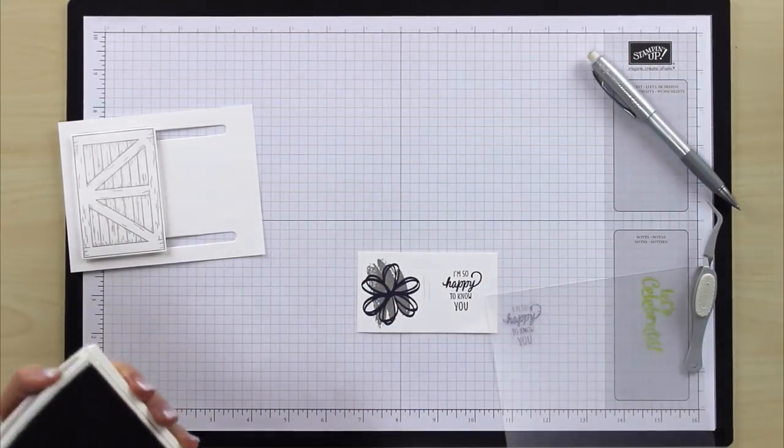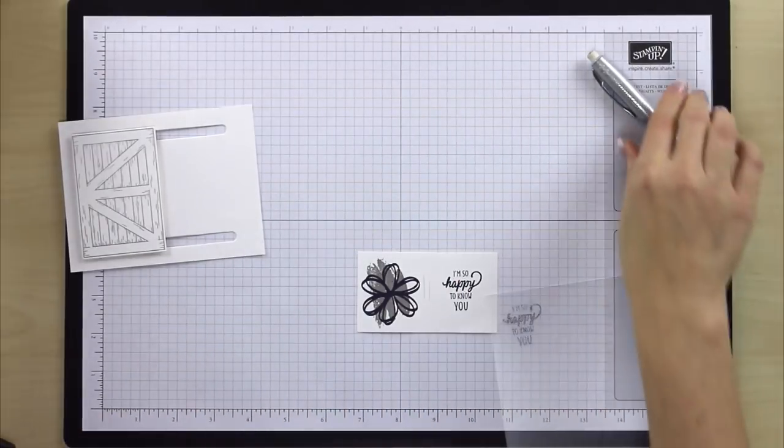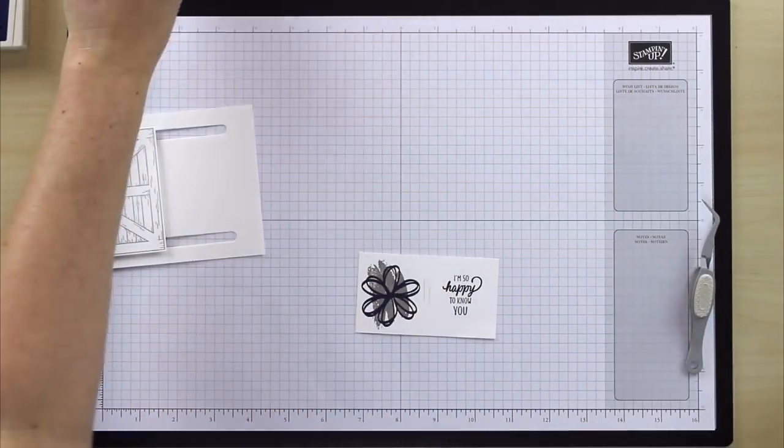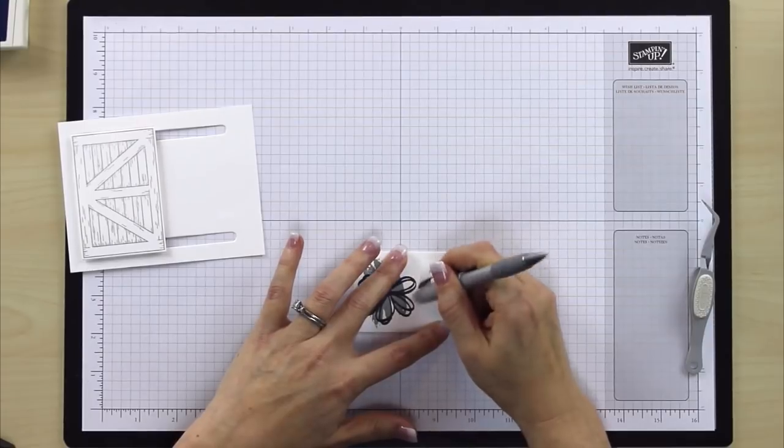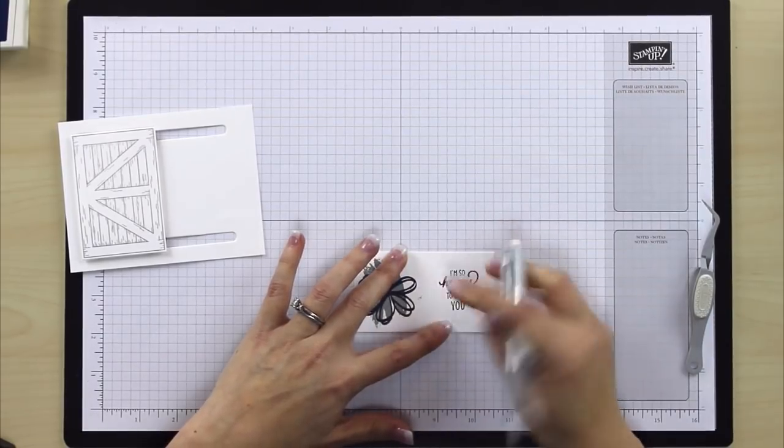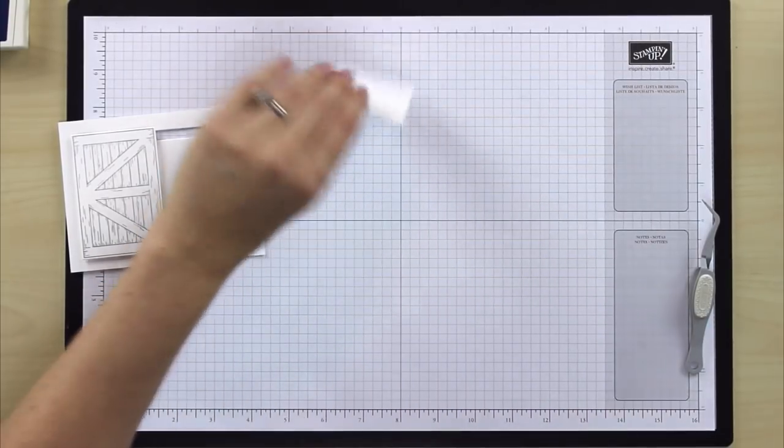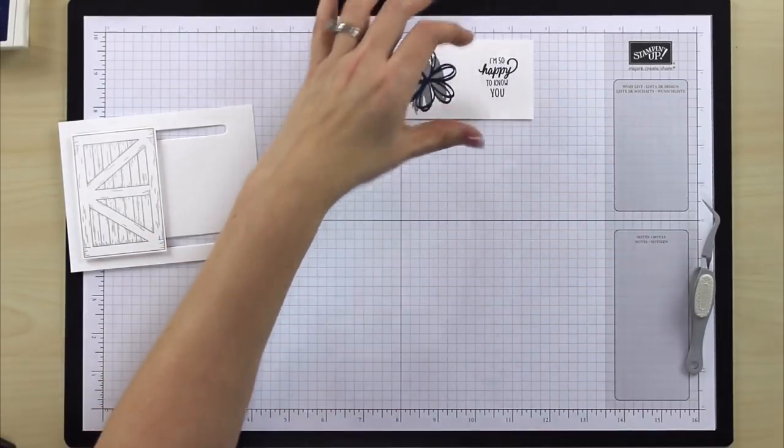Now remember that really good eraser we were talking about? This is when you're going to need it because you want to get rid of those pencil lines. Nobody wants to see those. It's like they were never even there. So now we have done all of our die cutting, we have done all of our stamping. We're just ready to do the final assembly, so let's get that done. This is my favorite part of every project. This one is just about done.